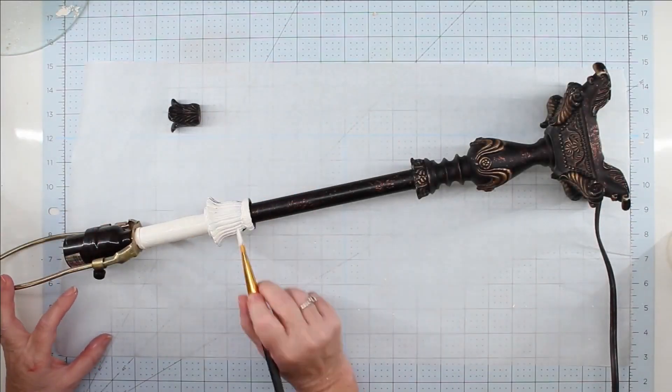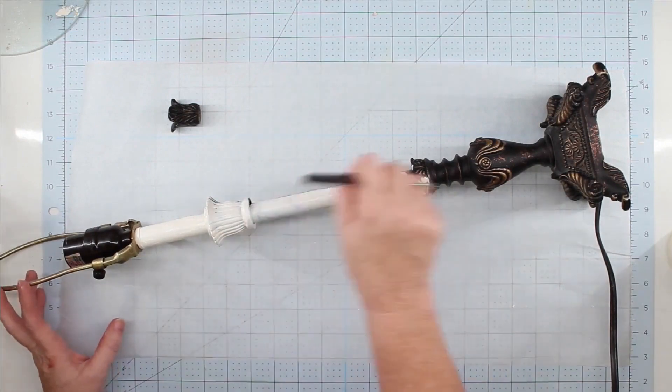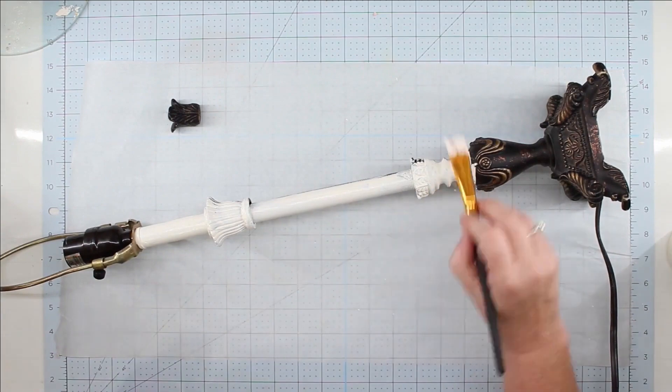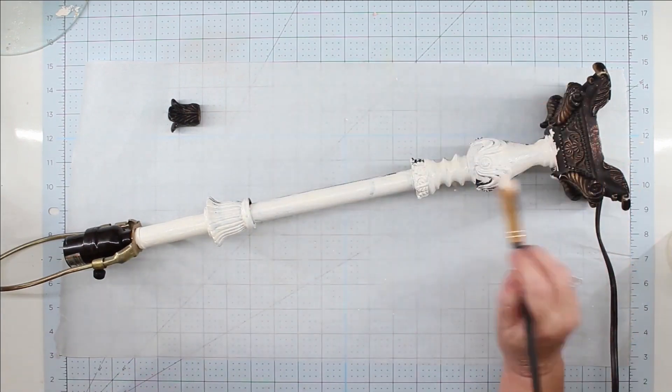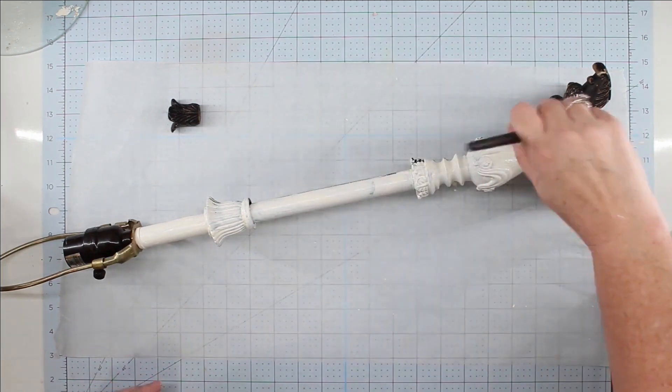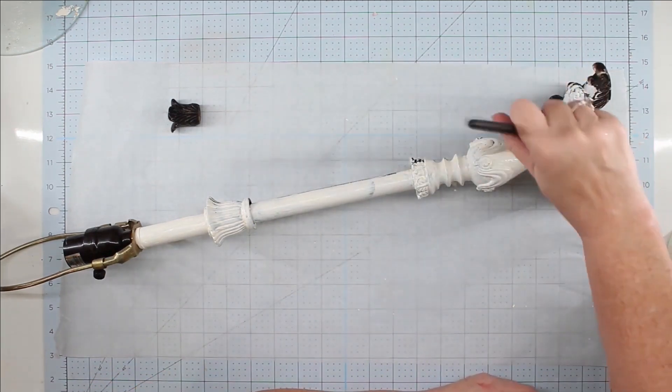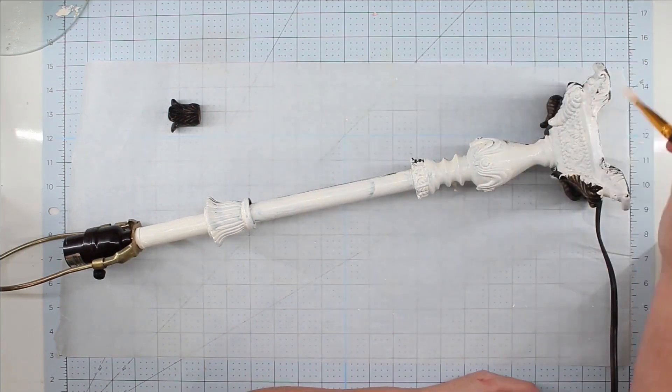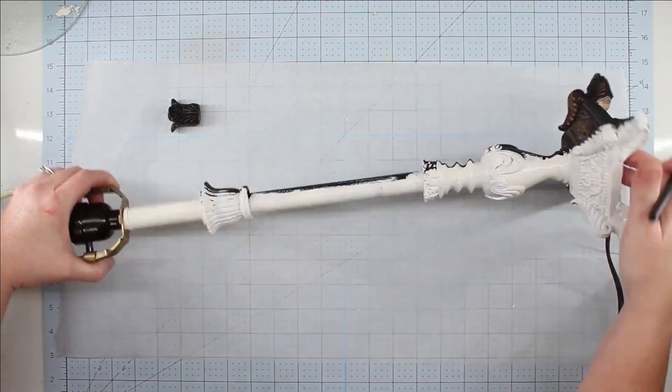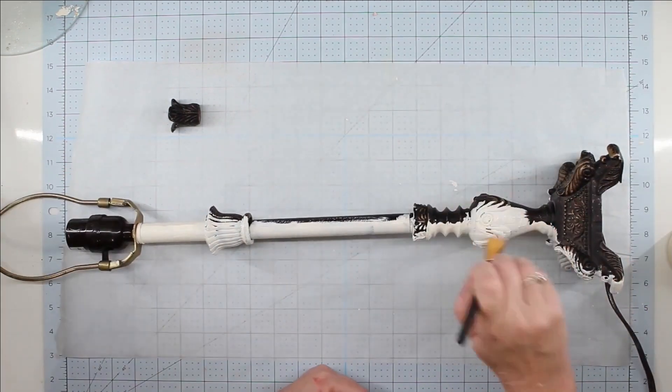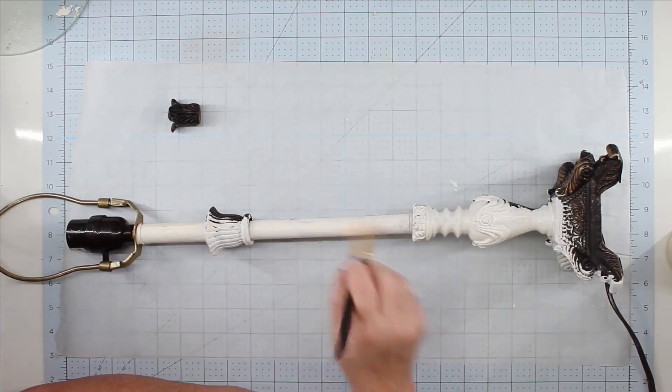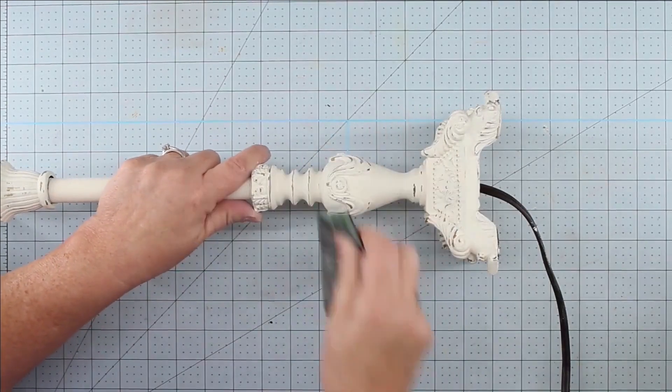While we're waiting on that to dry, we're going to paint our lamp base. I love all the detail work on this, and as soon as I saw it I knew it could be a beautiful shabby chic piece. I'm using my Waverly chalk paint in ivory and I actually ended up giving it two coats of paint. After the first one it was just a little streaky, but I wanted it to be solid.